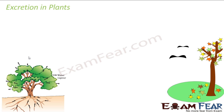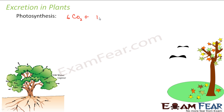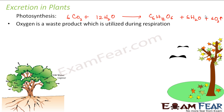Let us look at the excretory system in plants — how do plants excrete waste materials? Let us look at the process of photosynthesis. Carbon dioxide combines with water in the presence of chlorophyll and light to form glucose, water, and oxygen. Now this oxygen produced — is it utilized for any other purpose? It is utilized for respiration, but as far as photosynthesis is concerned, oxygen is a waste product. The good product is glucose; oxygen is of no use to photosynthesis, so it must be released. That oxygen is utilized during respiration so that its accumulation does not take place inside the plants.